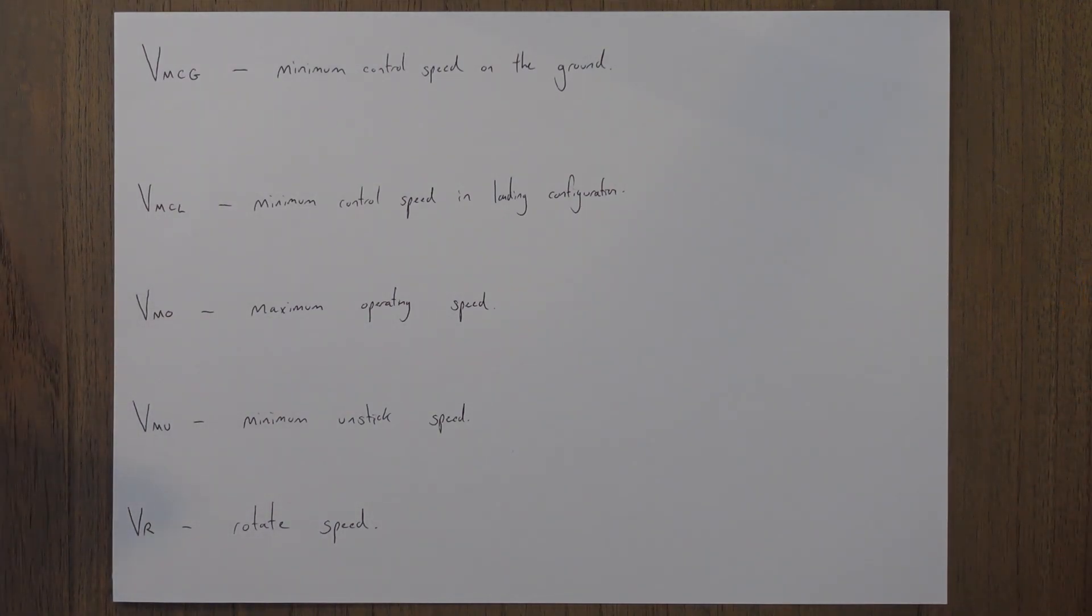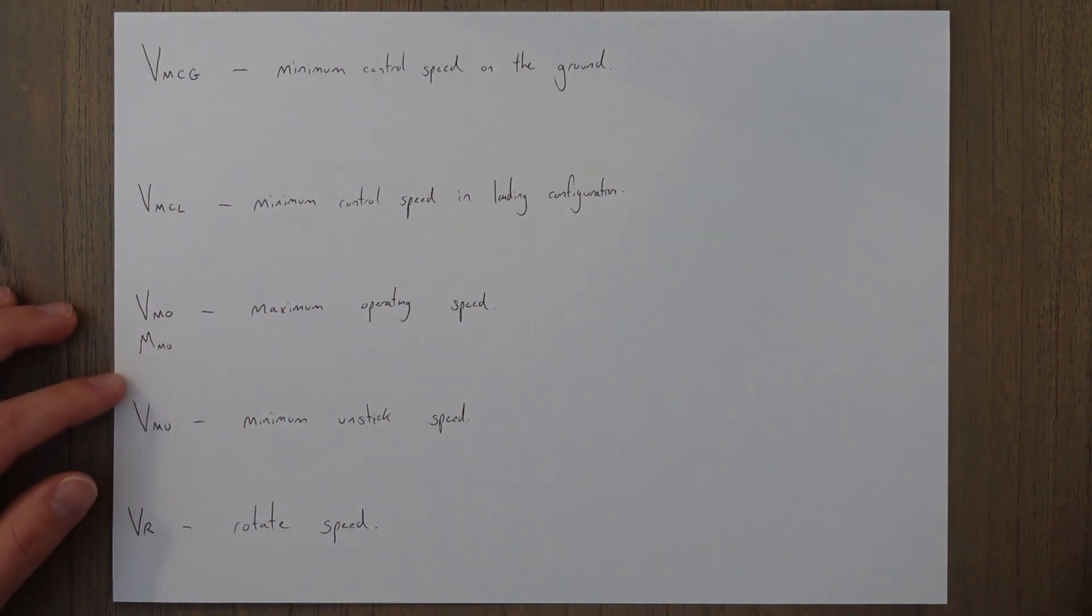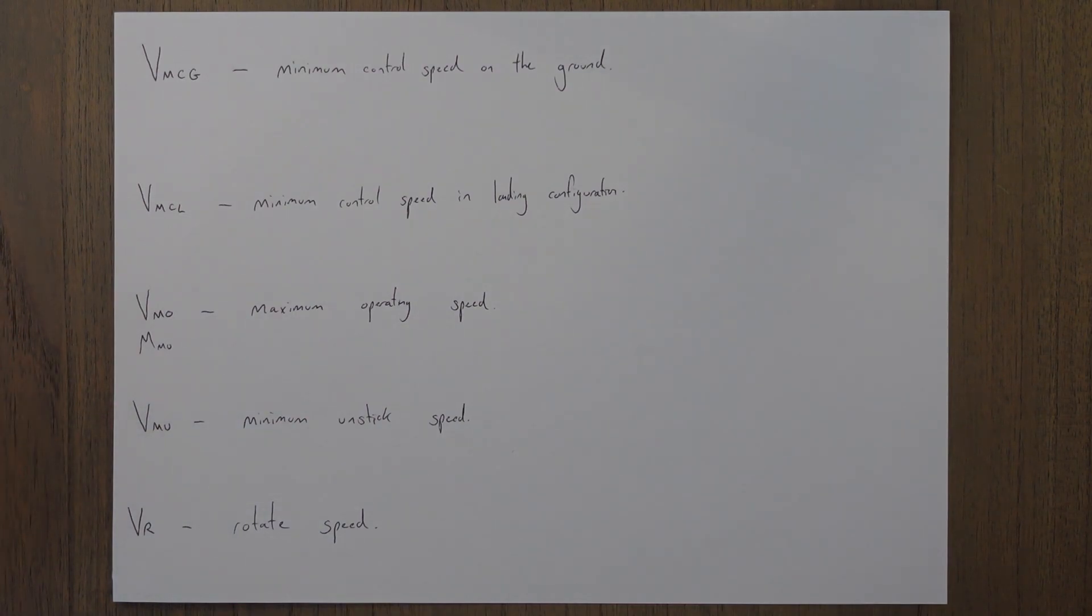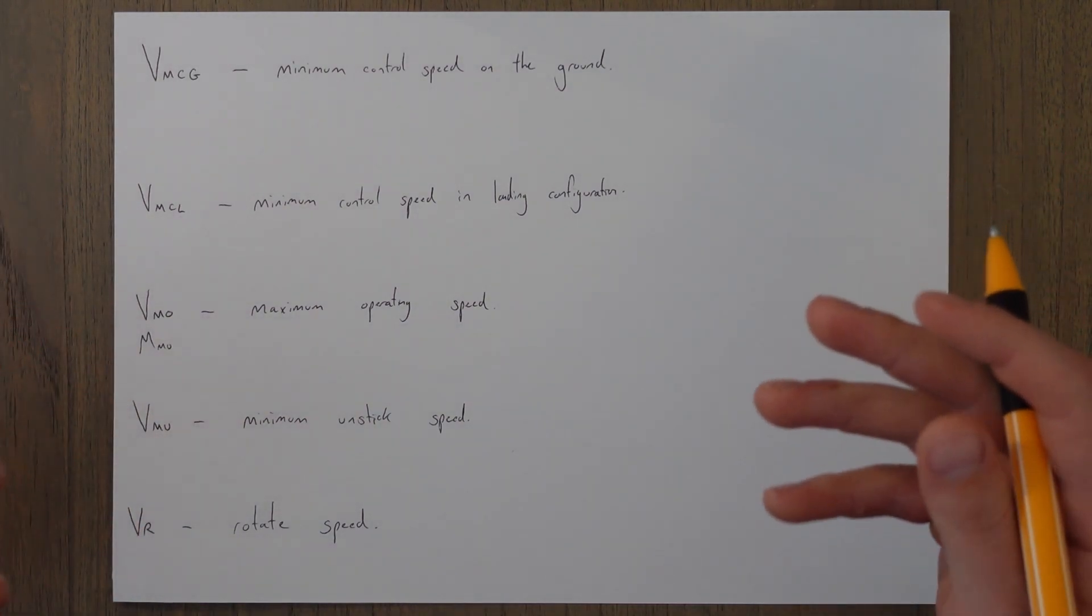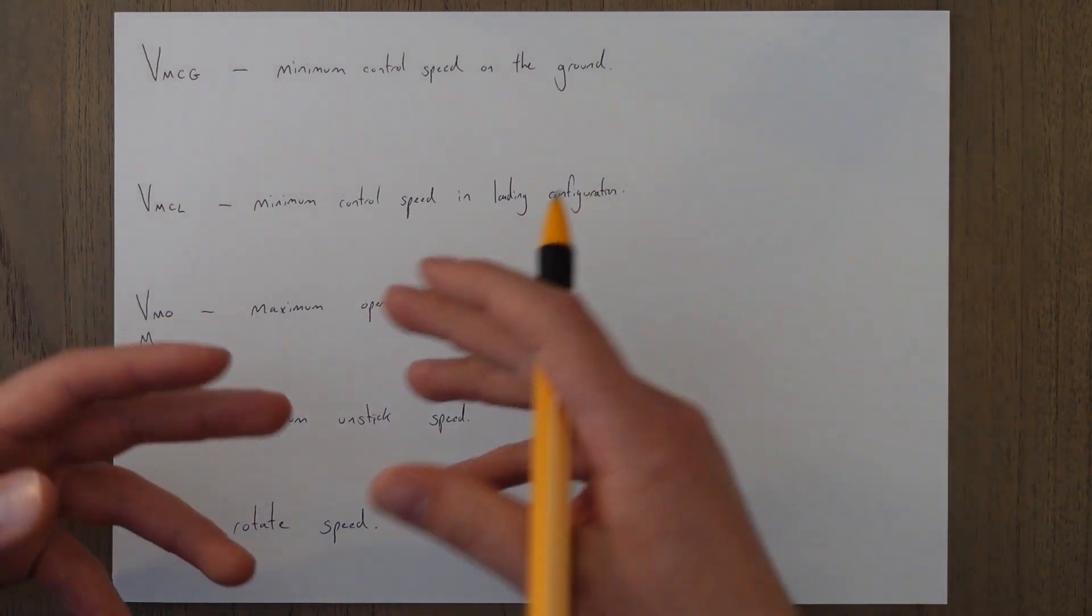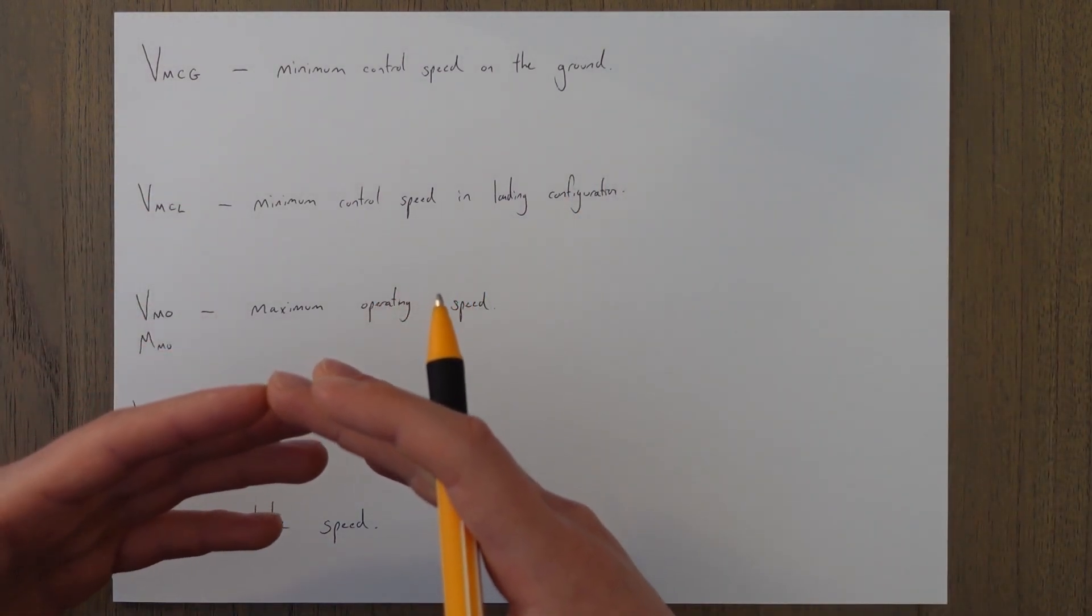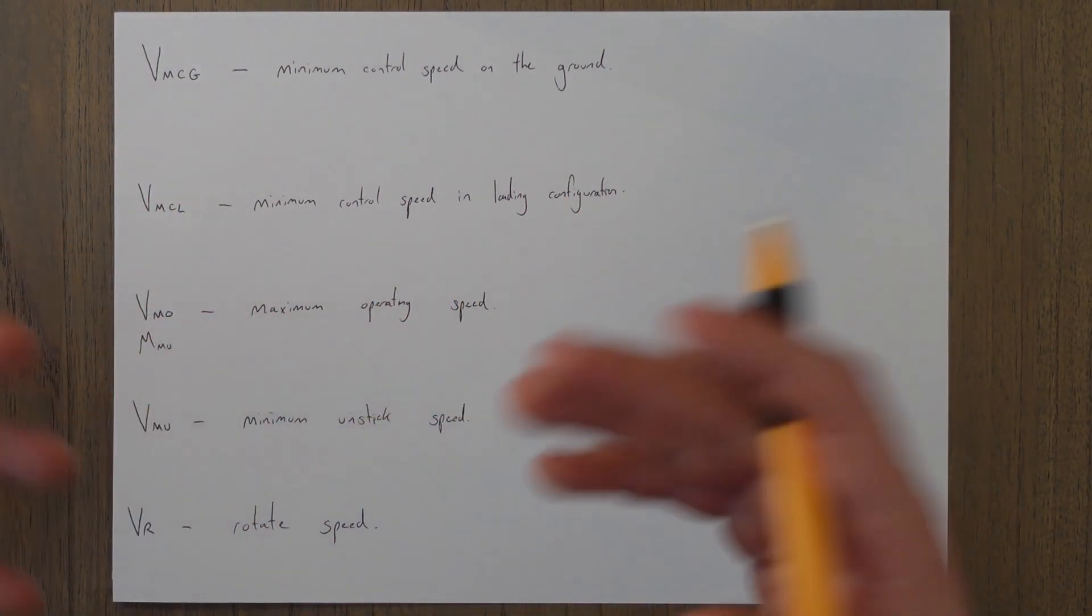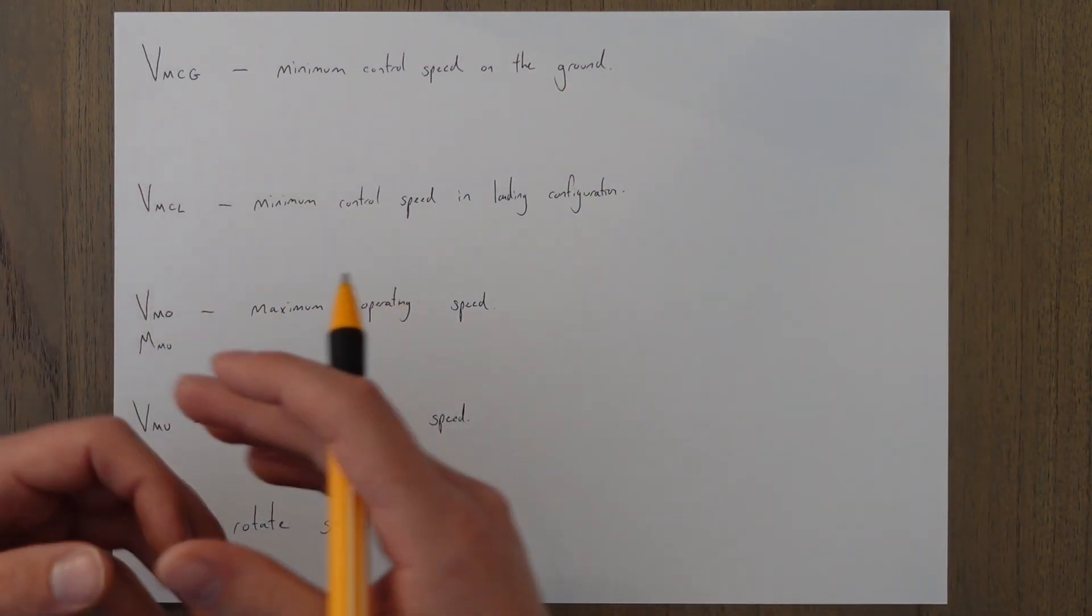VMO is the maximum operating limit speed. Exceeding VMO may trigger an overspeed alarm and quite often this will be a Mach number as well to give MMO. This is also a weird speed because it changes depending on the configuration of the aircraft. VMO might be quoted in the manuals as 250 knots for example, but if we have the first stage of flaps out we might have a flap limiting speed of 200 knots. So that would be our new maximum operating speed in this configuration.